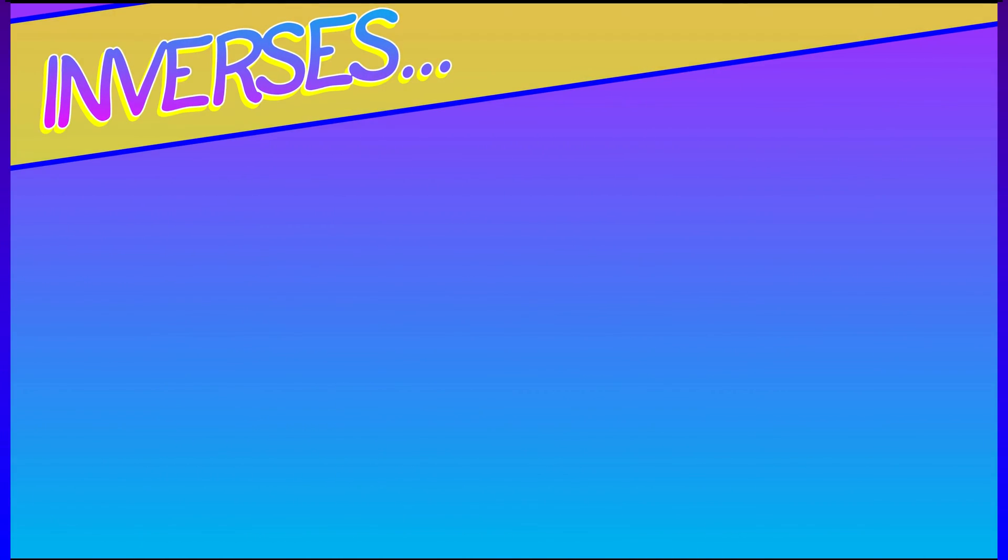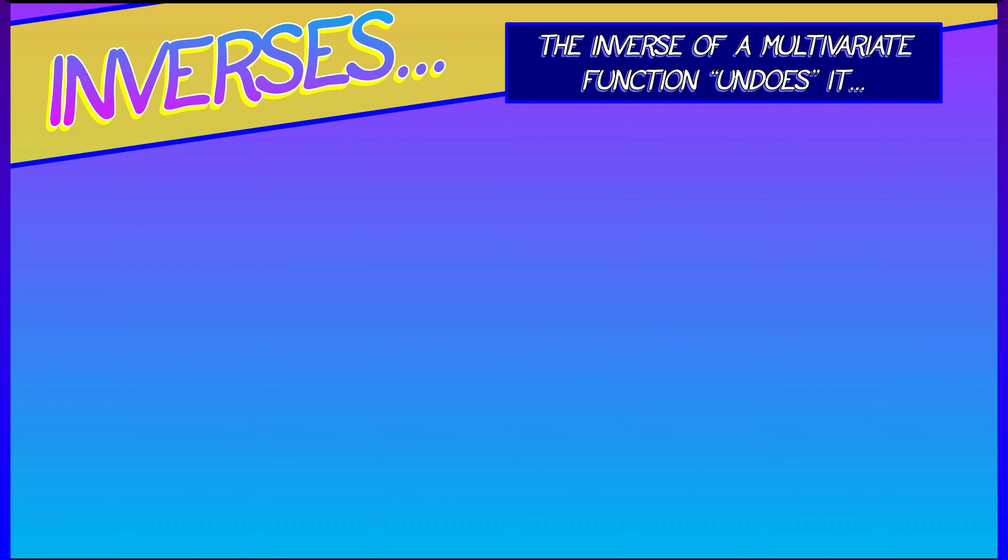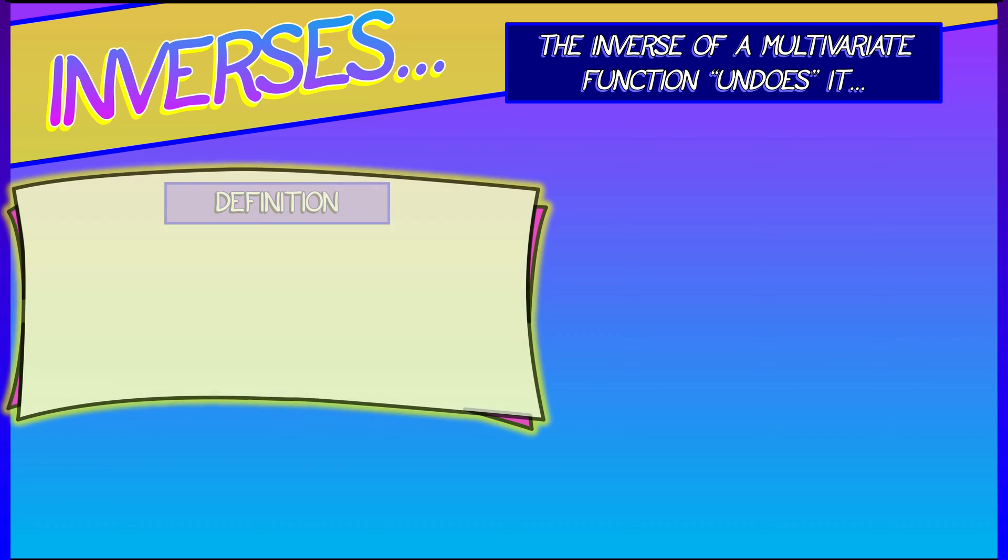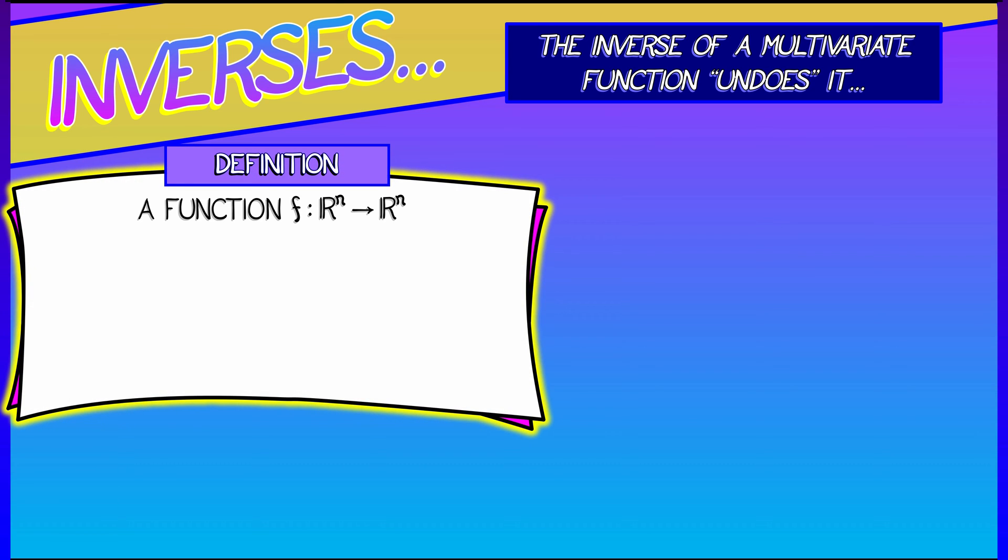So let's review what it means to be an inverse. And in the multivariate context, it's the same thing. The inverse undoes the function. So if f has n inputs and n outputs, then an inverse for f is a function that when you compose it with f, you get the identity.